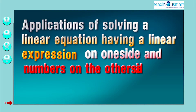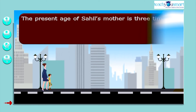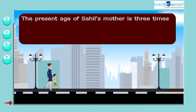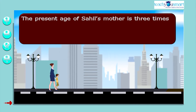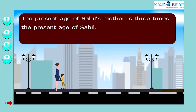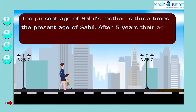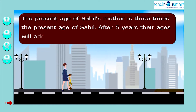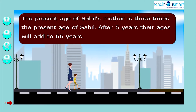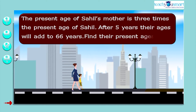Let's begin with an example. The present age of Sahil's mother is three times the present age of Sahil. After five years their ages will add to 66 years. Find their present ages.